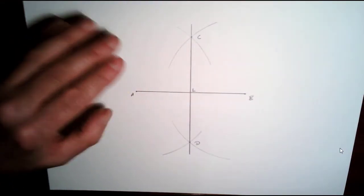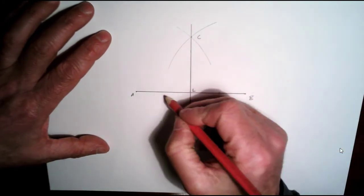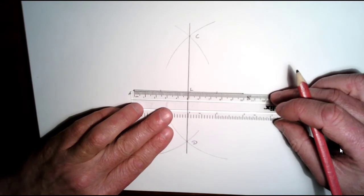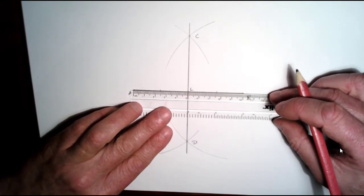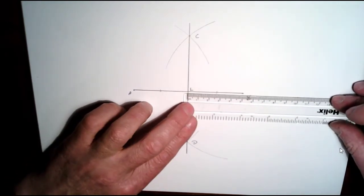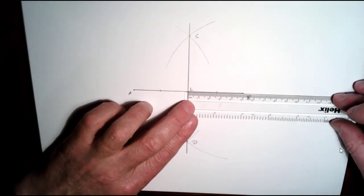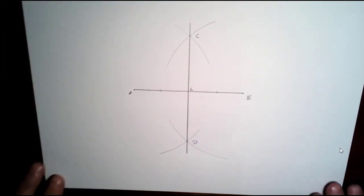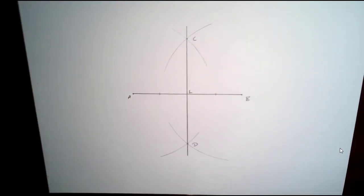And also this length here should be the same as this length here, so let's just measure those. You can see here that that's 5 cm from here to here, and on the other side then we can see that we have 5 cm as well, so it has bisected the line segment AB, and that's really it for this construction.